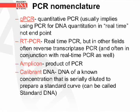Now let's go over some PCR nomenclature. QPCR is known as quantitative PCR, which usually implies using PCR for DNA quantitation in real time, not endpoint. RT-PCR stands for real-time PCR, but in other fields it can stand for reverse transcriptase PCR, and often it is used in conjunction with real-time PCR. Amplicon is the product of PCR. Calibrant DNA is the DNA of a known concentration that is serially diluted to prepare a standard curve — this can also be called standard DNA.